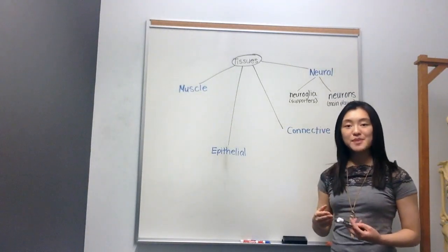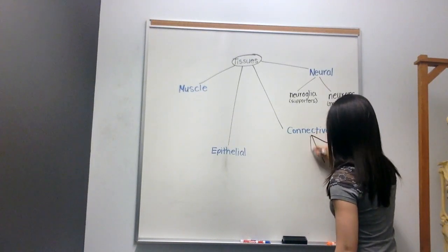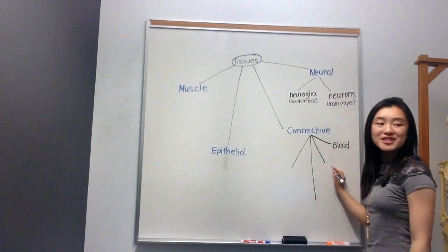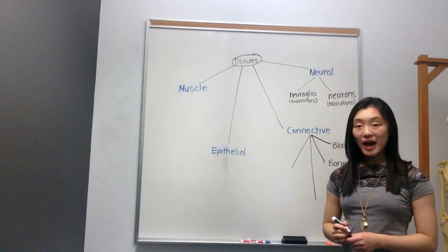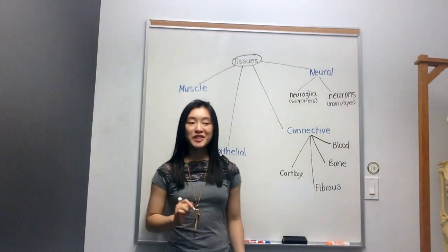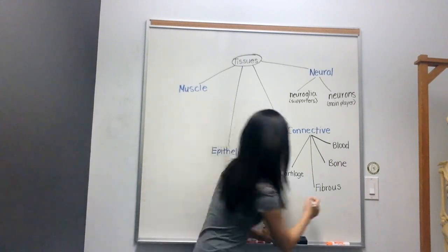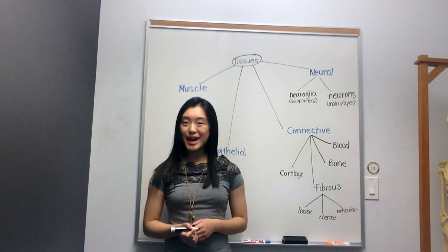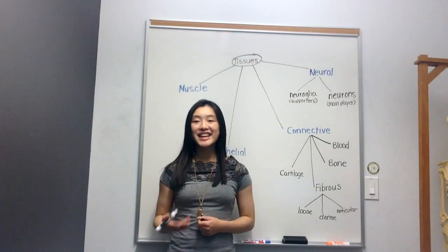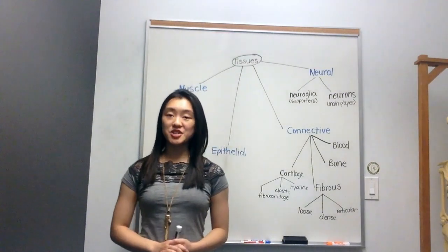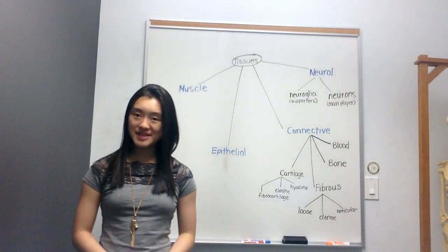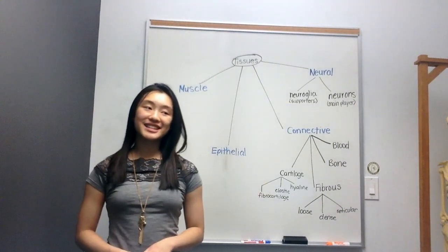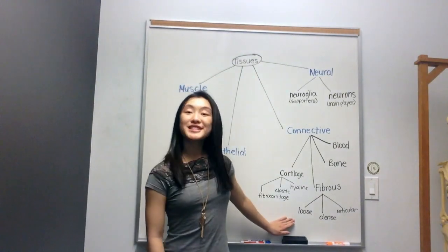Moving on to connective tissue — within connective tissue we have four types. The first, one that people often forget, is blood. The next is bone. Then we have fibrous connective tissue, which has three subtypes: loose, dense, and reticular. Finally, we have cartilage, which also has three types: hyaline, elastic, and fibrocartilage.